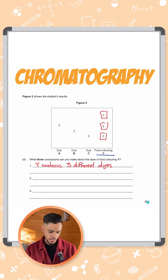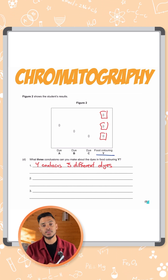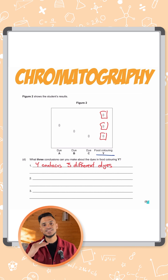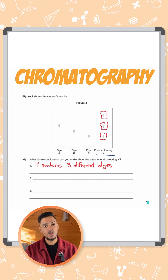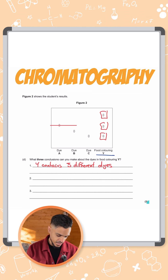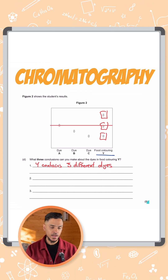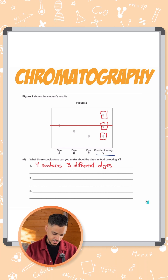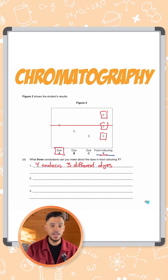That's one mark — we need two more. What we can do now is compare those dots with the other three dyes on the chromatogram. If they're on the same level, it means they have the same RF value, which means they're essentially the same type of dye. You can see here these two dots are on the same line — on the same level — so we can assume they're the same dye. So we can say that food colouring Y contains dye A.